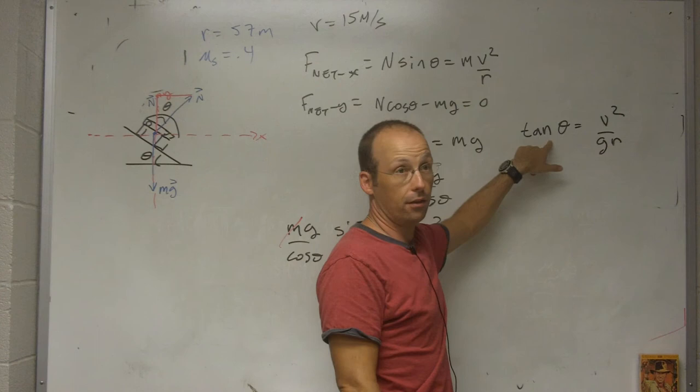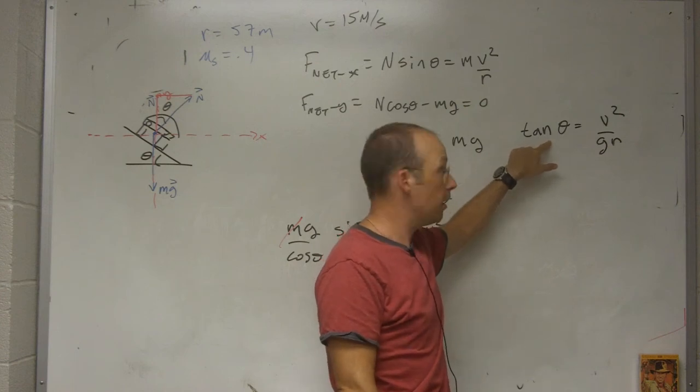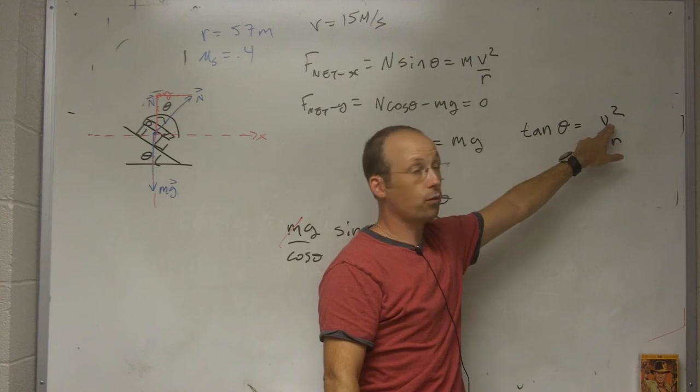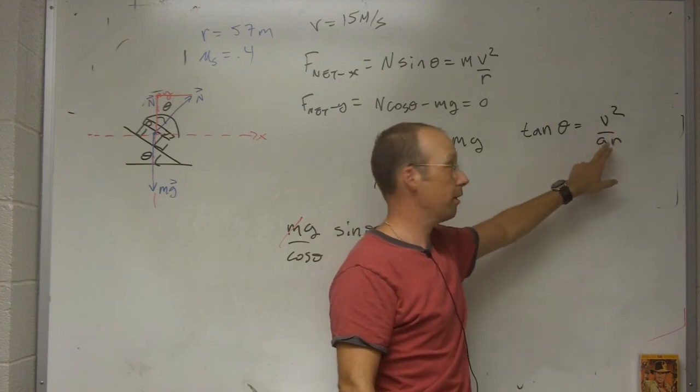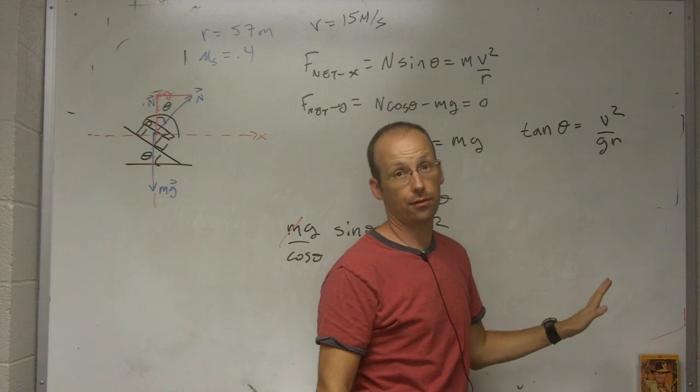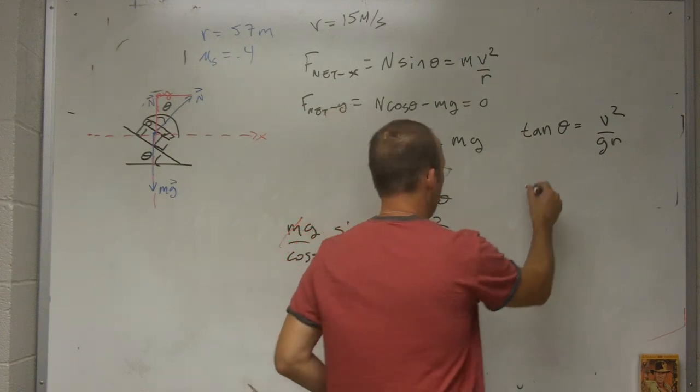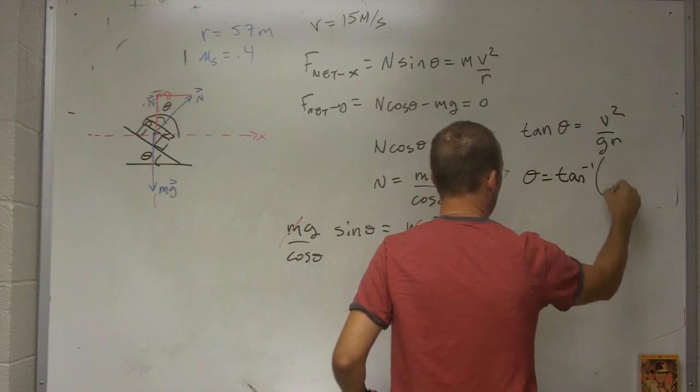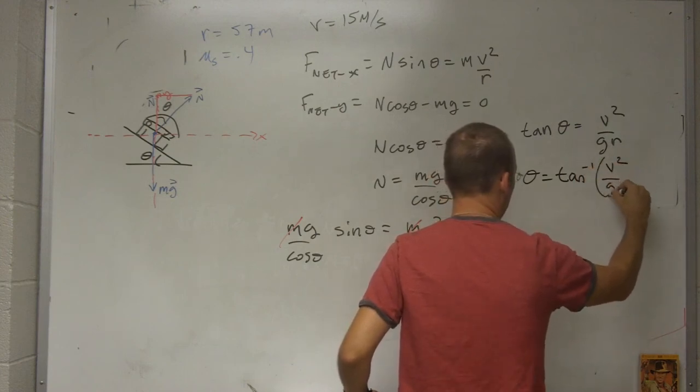This is a great place to check if you're doing the right thing. Tangent theta is a ratio. So it should have no units. So this should have no units. This is meters squared per second squared. That's meters per second squared times meters. So that has no units too. So theta is going to be the inverse tangent of v squared over gr.